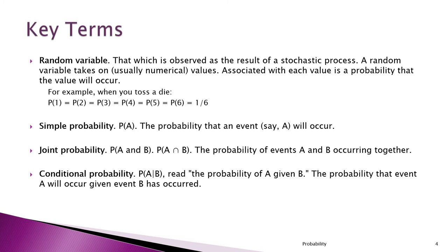That which is observed as the result of a stochastic or probabilistic process is a random variable. A random variable takes on values, and each of these values has a probability related to an event. For example, when we toss a die, that's a probabilistic process.